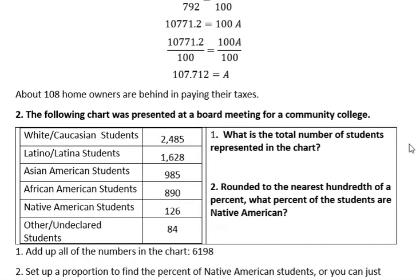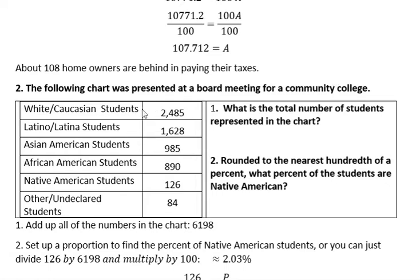In the second example, we have a chart presented at a board meeting for a community college showing all the different types of students who have identified their ethnicity, along with the numbers of those students. The first question is: what is the total number of students represented in the chart? That's just adding those up, but you can't answer the second question unless you answer the first. Adding all those up gives you 6,198.